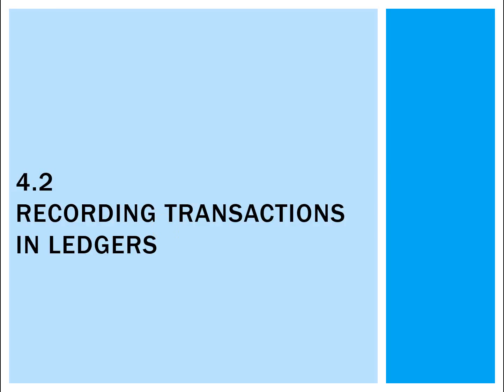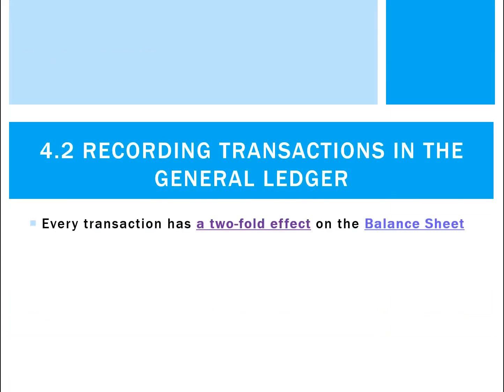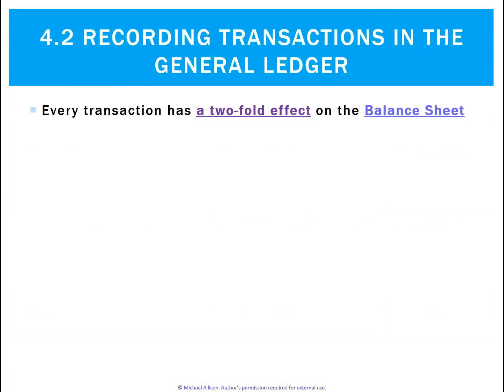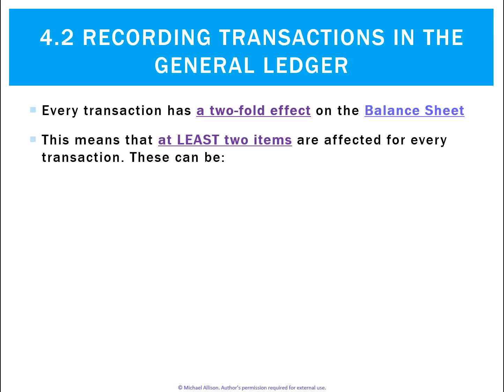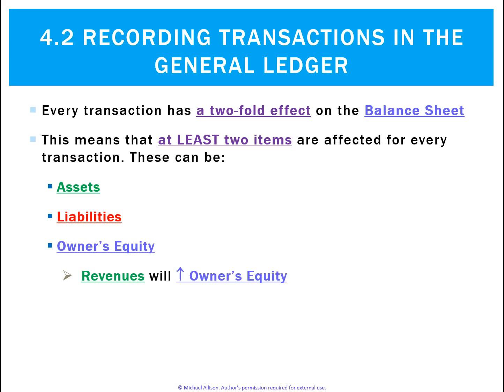Let's look at how we record transactions in ledgers. The first thing to remember is that every transaction has a two-fold effect on the balance sheet. What that means is that for every transaction, at least two items will affect either assets, liabilities, owner's equity, revenues — which will make owner's equity go up — or expenses, which will make owner's equity go down.